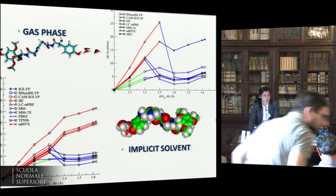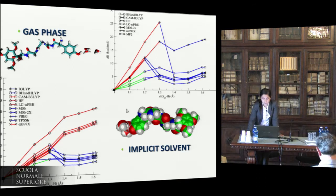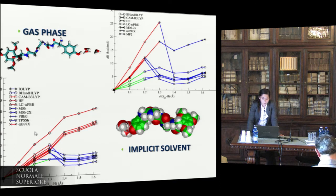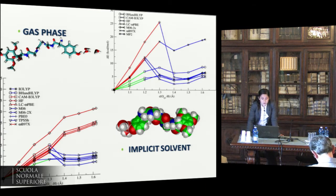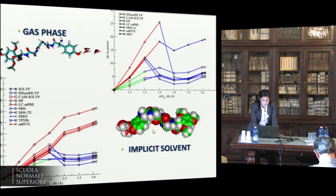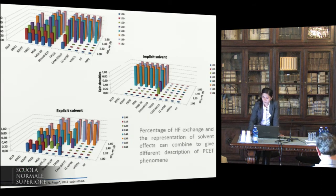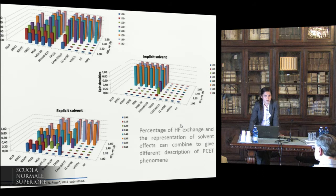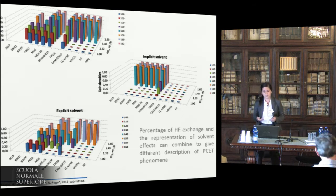We can also use an implicit model to mimic the presence of the solvent. Here, we can observe that global hybrid functionals that before had been unable to locate the unpaired electron now behave well. We hypothesize that this is because there is a compensation of error — specifically the self-interaction error — with the representation of the solvent given by the implicit model. This slide summarizes the results shown previously: the percentage of RS3-PBE exchange contained in the functional must be taken into consideration together with the choice of solvent model.